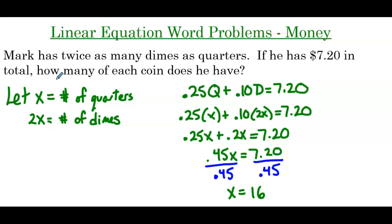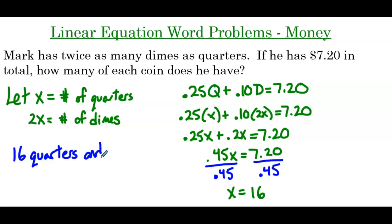Rereading the problem: how many of each coin does he have? If x equals 16, that means he has 16 quarters. And 2x, so 32 dimes.